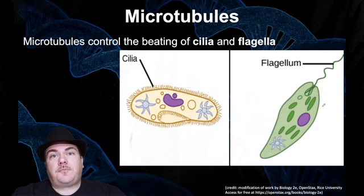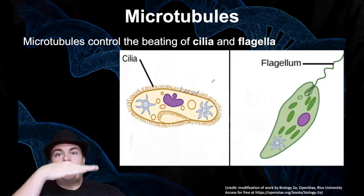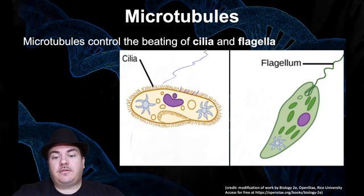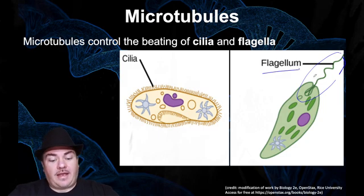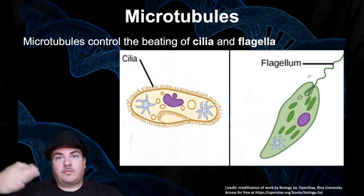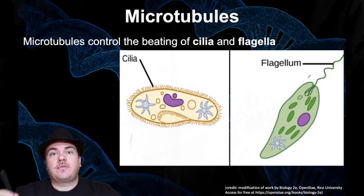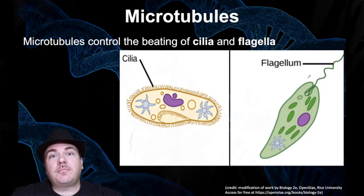Microtubules are also inside cilia and flagella. Cilia are short hair-like structures that can bend and move, allowing an organism to swim through liquid. Flagella are long tail-like structures that spin like a propeller, also propelling an organism through liquid. Inside both cilia and flagella there are tubulin microtubules, and those microtubules interacting with motor proteins allow the cilia and flagella to move, enabling these organisms to swim.